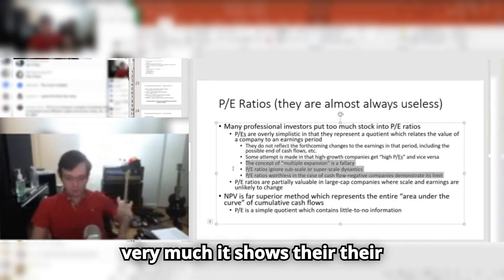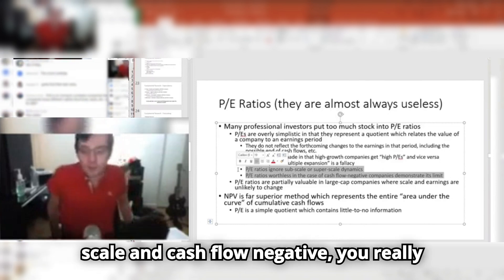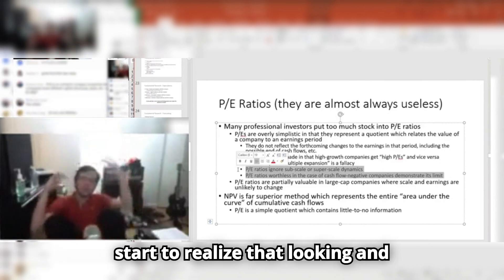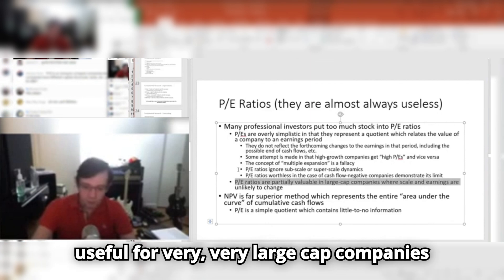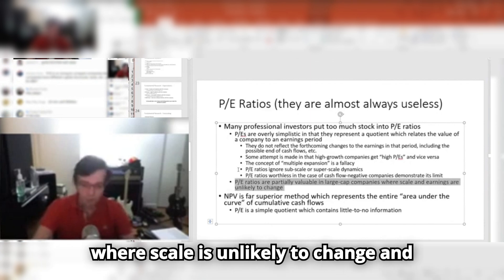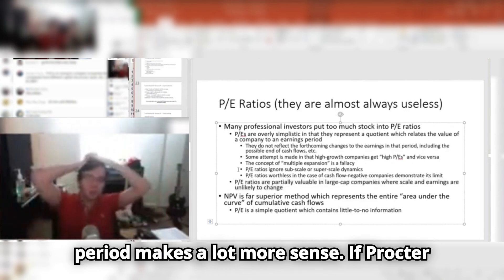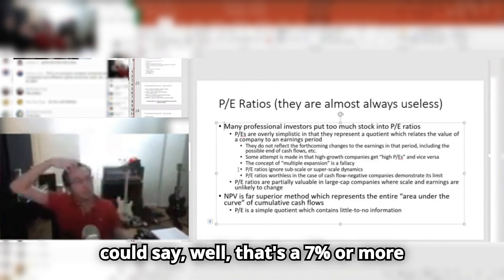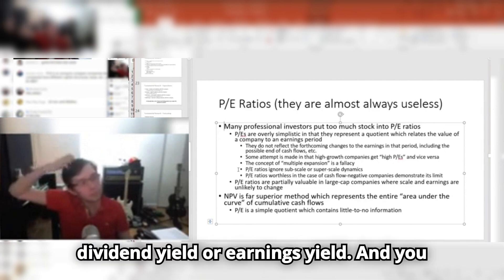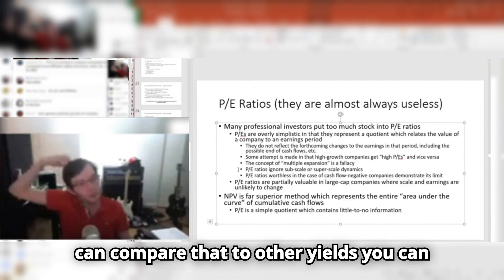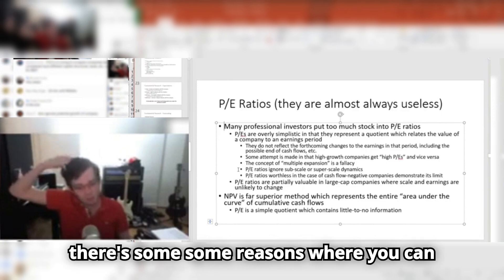P/E ratios show their worthlessness when you think about companies that are subscale or superscale and cash flow negative. You really start to realize that thinking about P/E ratios is more or less nonsense. Sometimes they can be useful for very large-cap companies where scale is unlikely to change and earnings are unlikely to change, and then the shorthand of it being a payback period makes more sense. If Procter & Gamble is 18 times earnings, you could say that's about a 6.2% earnings yield, and you can compare that to other yields in the markets. An inverse P/E is the way to think about that.